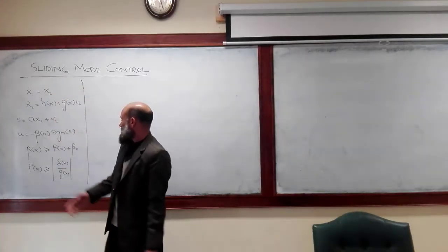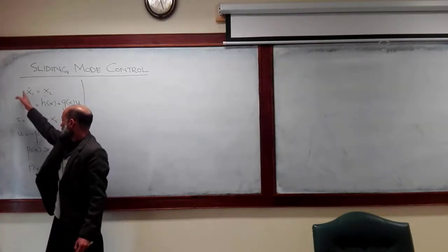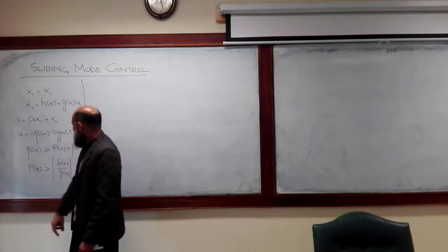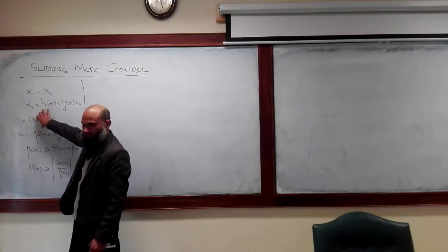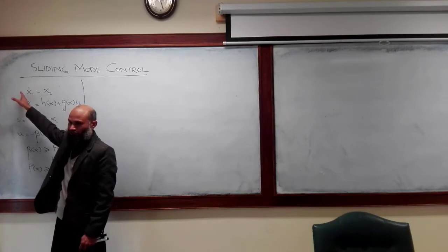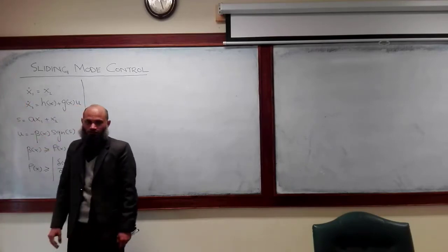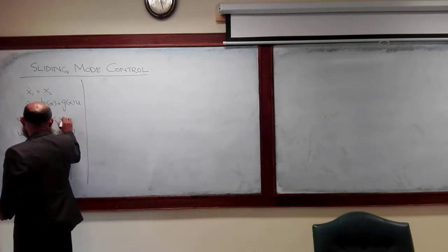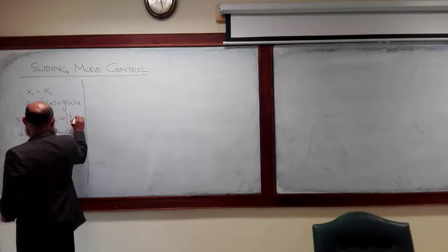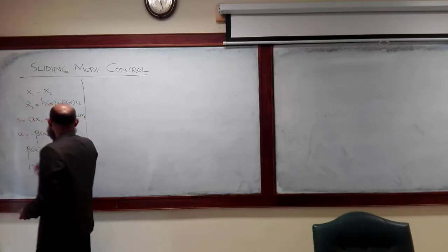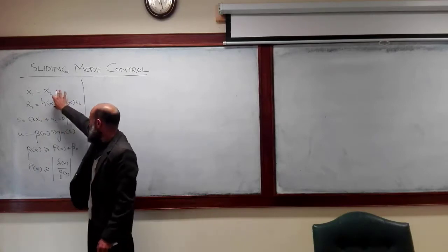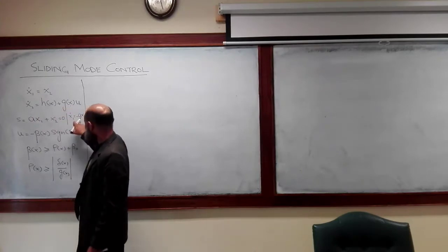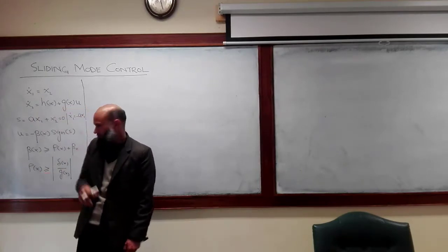We have talked about sliding mode control for a system with two states. It is quite simple. We define a sliding surface, and if trajectories are on this sliding surface without application of any control, the system will converge to the equilibrium point. The dynamics of the system on the sliding surface are independent of the non-linearities. So even if non-linearities are not exactly known, on the sliding surface it will still converge to the equilibrium point.